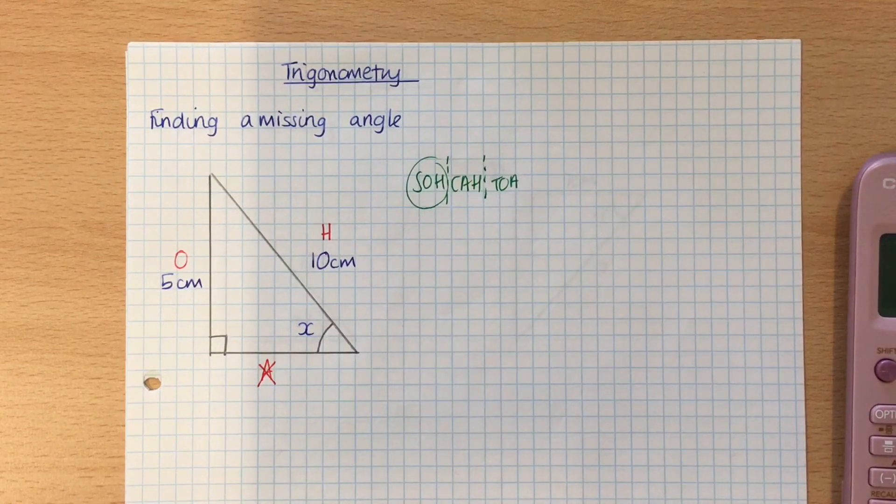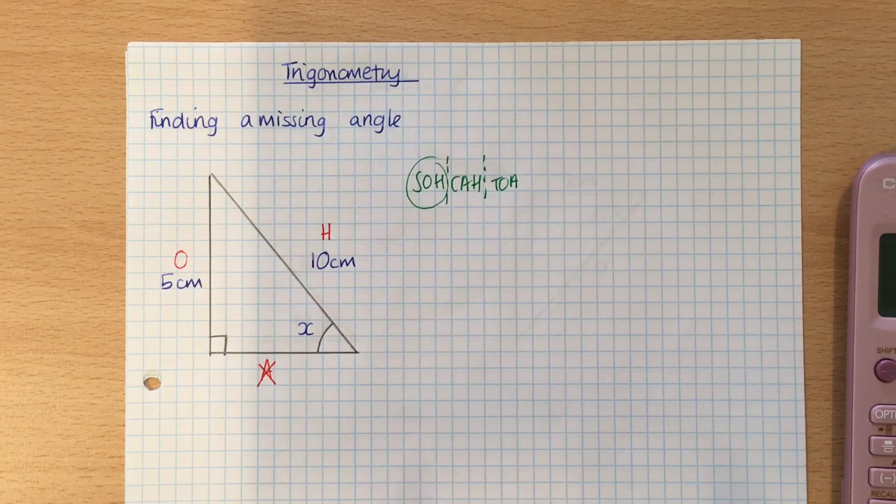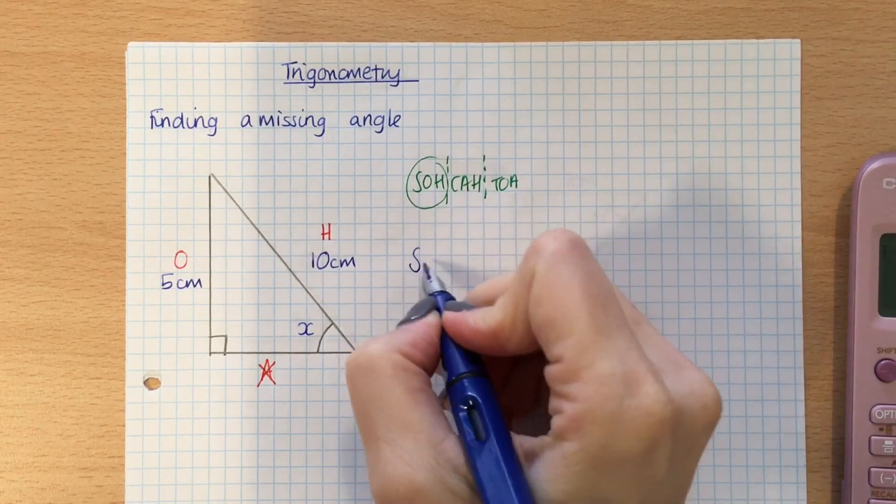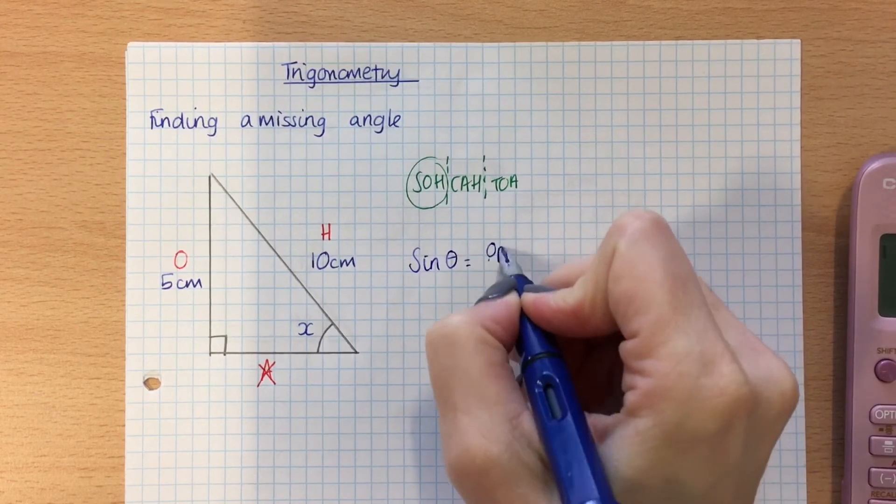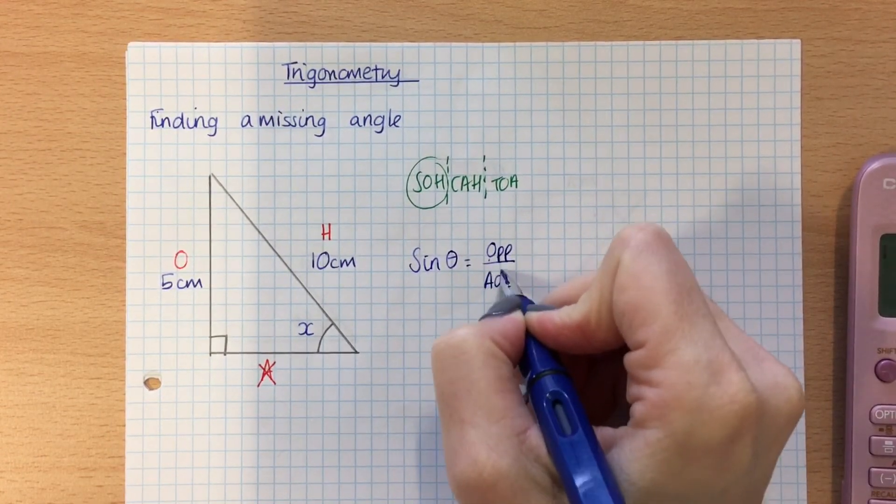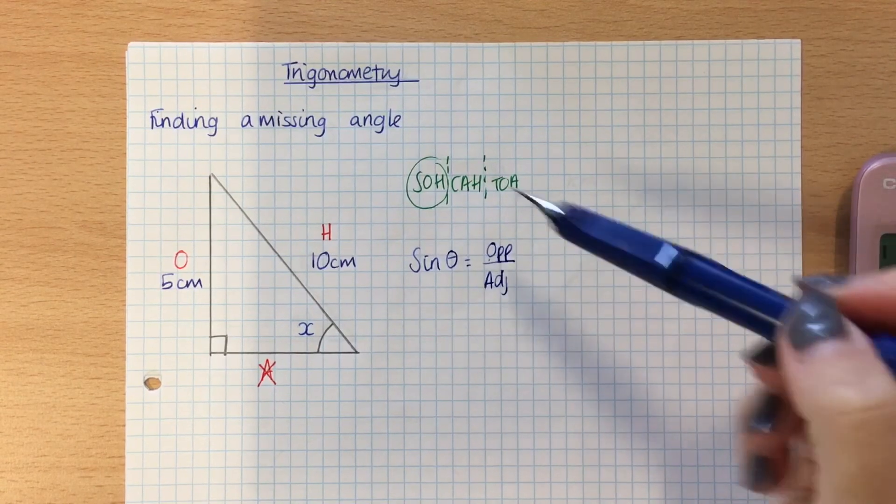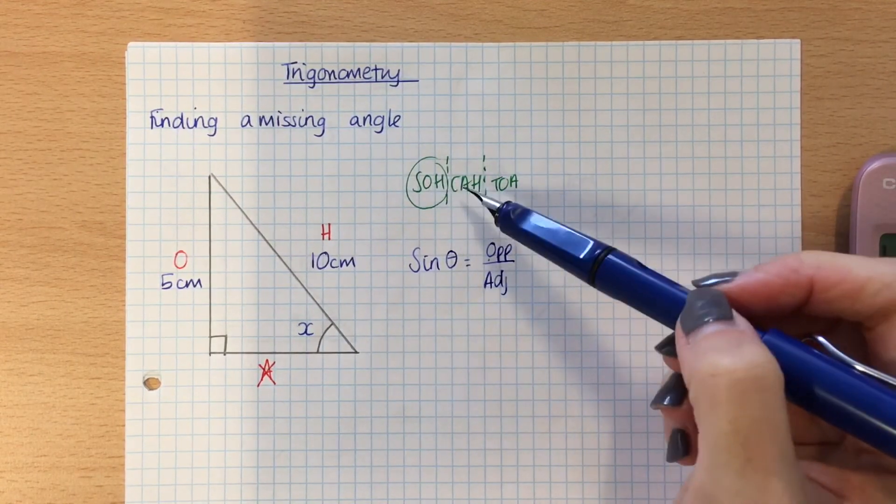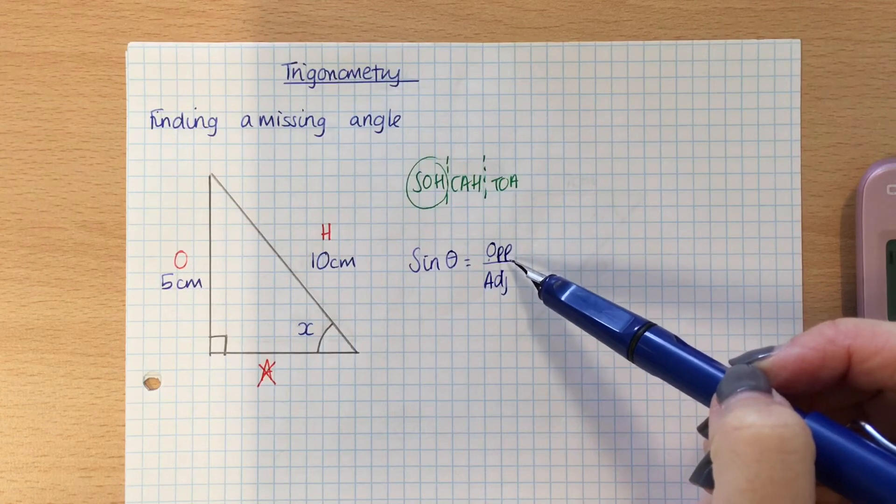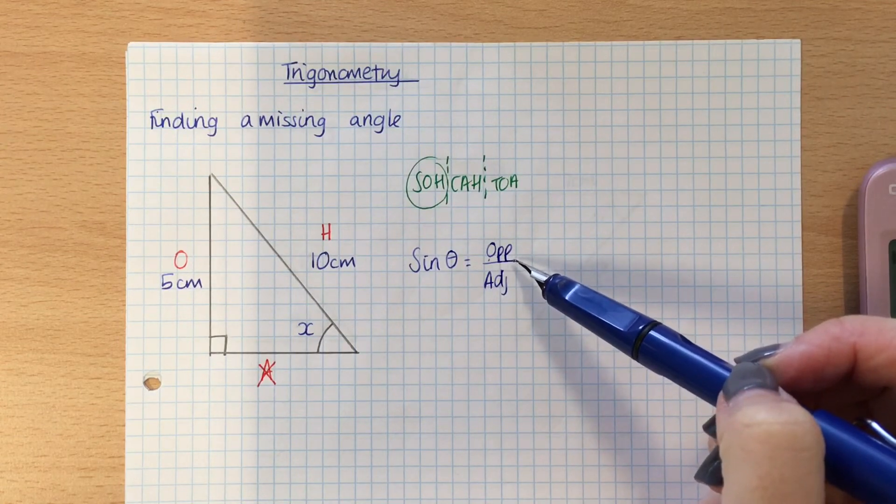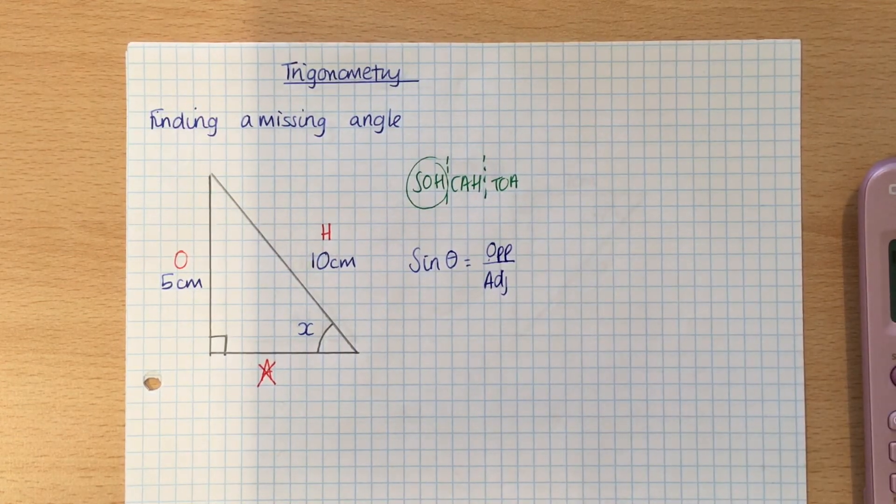So what we would do is we're going to write out our formula for SOH. So, sine of the angle equals opposite over hypotenuse. So in my last video, I told you how to write out the formula, remembering that the letter in the middle is always the one on top of the fraction, the numerator.